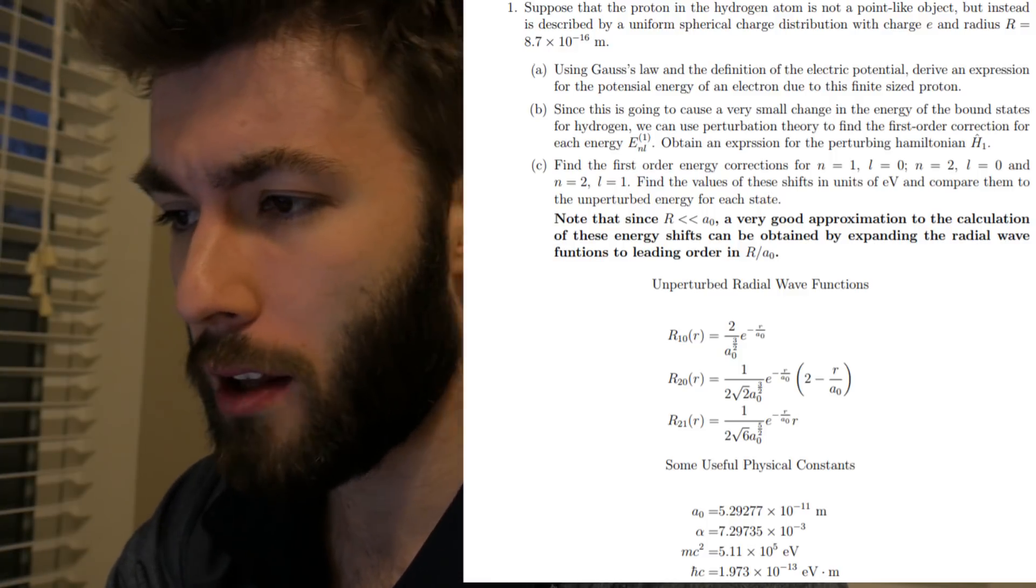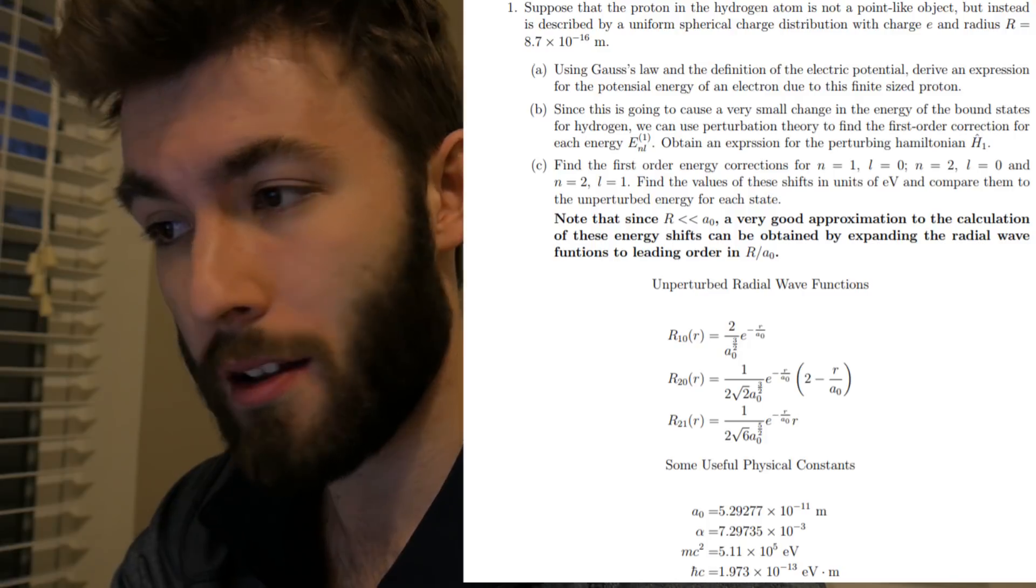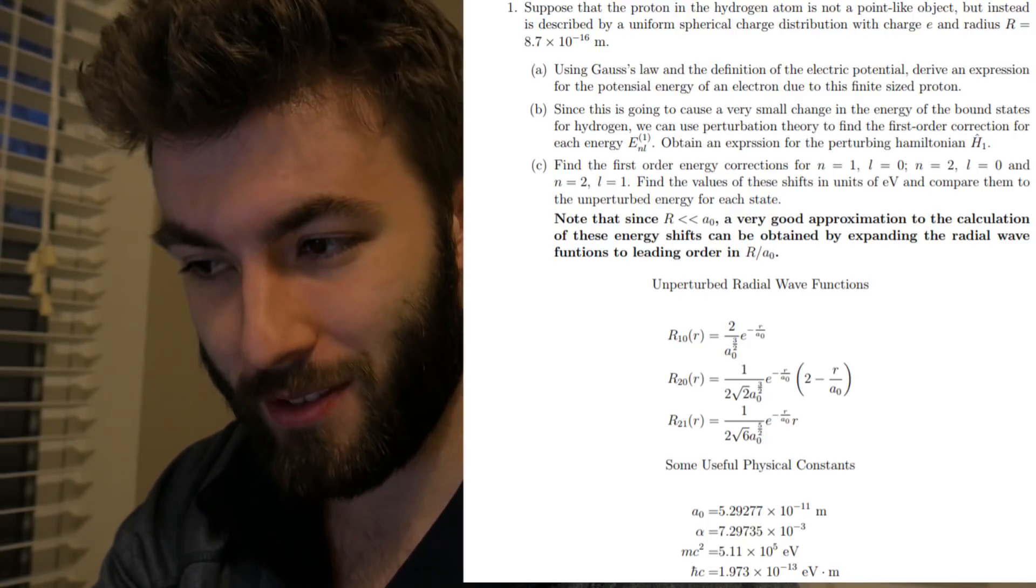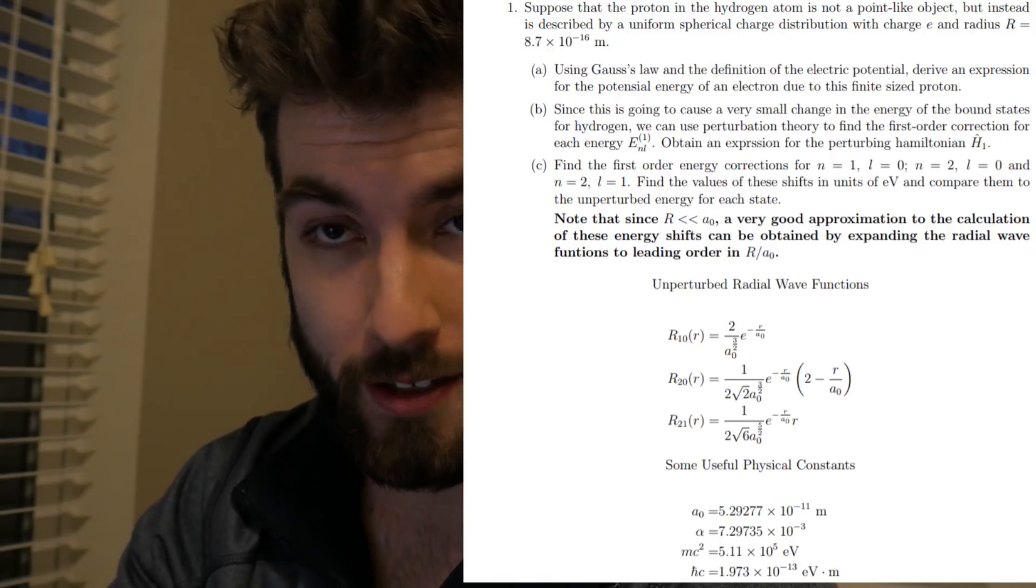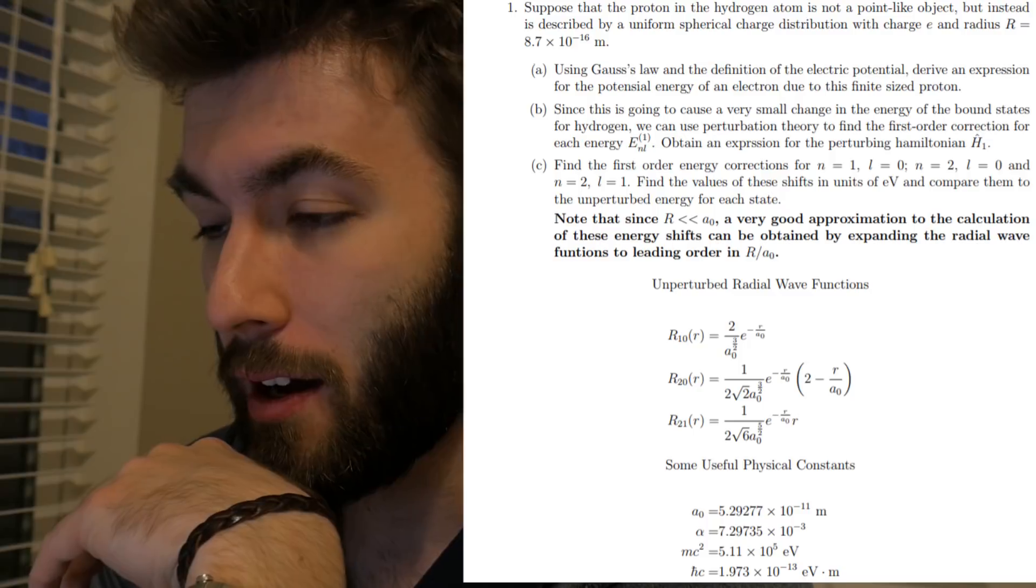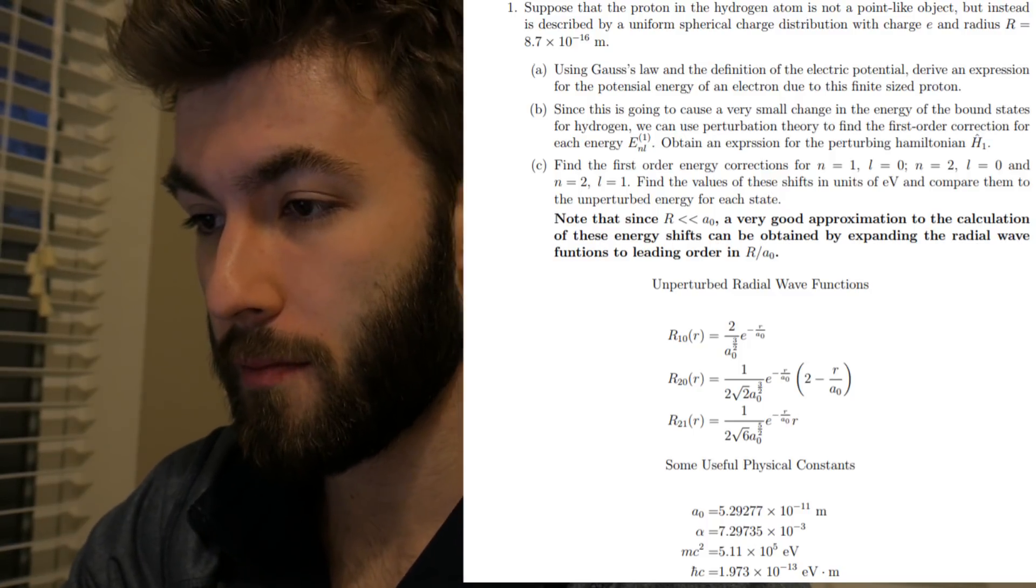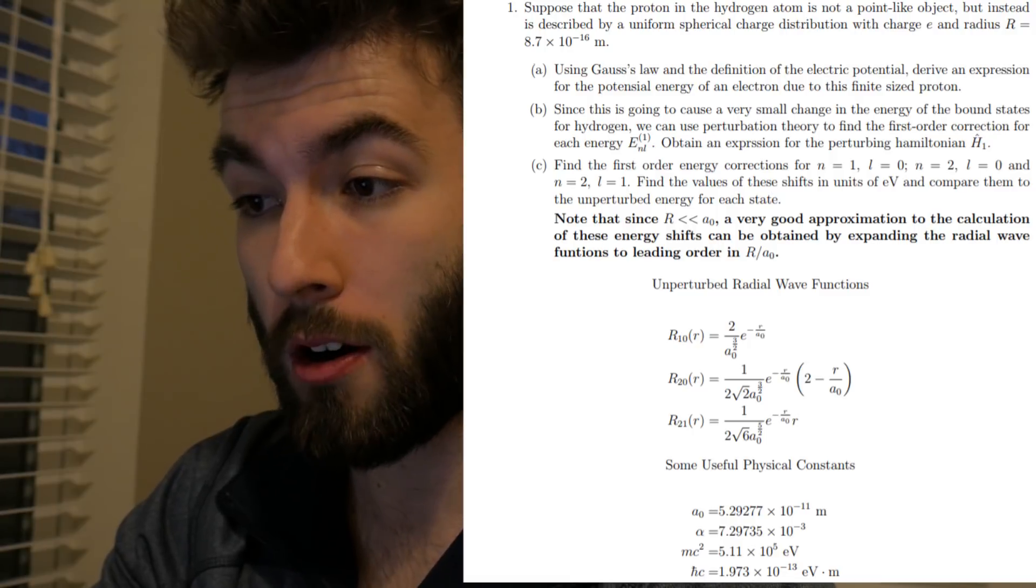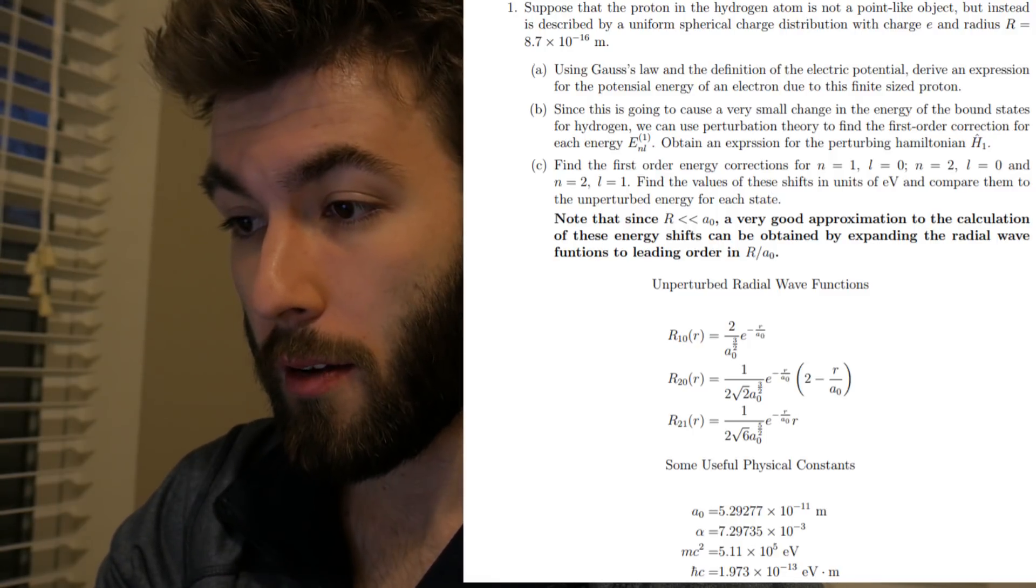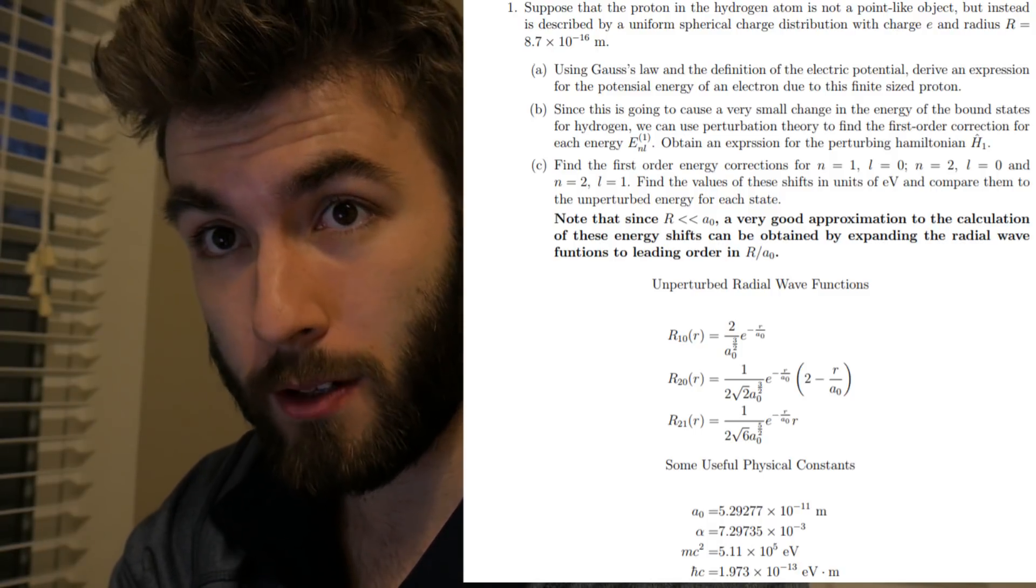And this is where, so that where I lost a point is actually not on the not in the actual quantum mechanics of the problem, but rather, it's kind of embarrassing, but actually just plugging in the numbers, giving some wrong answers here and there. The note says that you can assume that big R is much less than the Bohr radius, that's what a sub zero is.